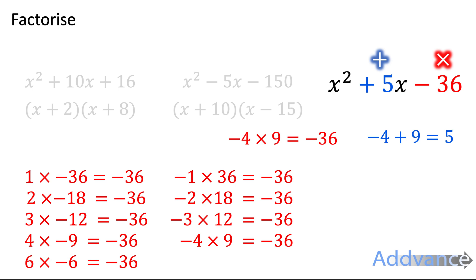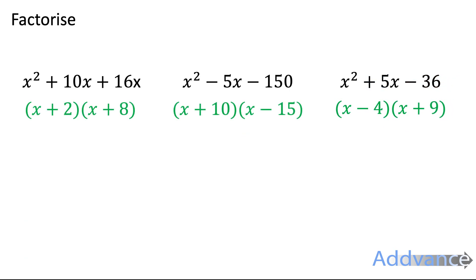Minus 4 and 9 make minus 36. Minus 4 plus 9 is 5. And so we put it into brackets as x minus 4, x plus 9. And there we have factorised all three quadratics. Every single time you're looking for two numbers that add to make the middle number and multiply to make the last number.